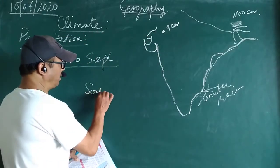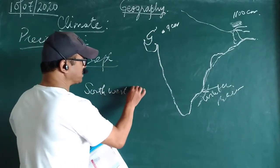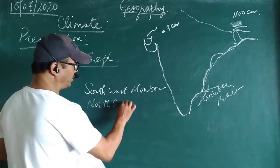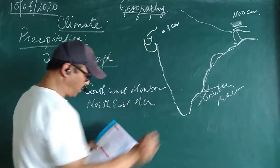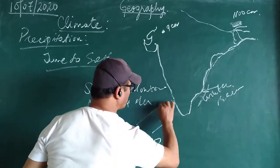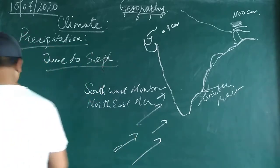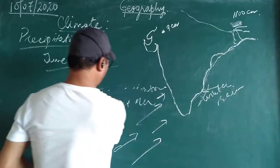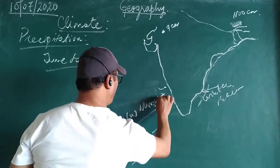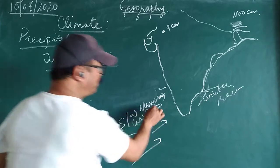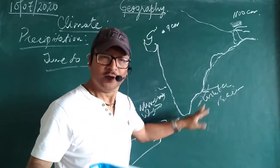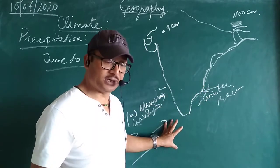One is called Southwest Monsoon and the other is Northeast Monsoon. The Southwest Monsoon winds are responsible for bringing rainfall during the summer season — something around June, July, August. There is another wind which blows from the northeast direction — these are the Northeast Monsoon winds. These are the Southwest monsoon winds and these are the Northeast monsoon winds.